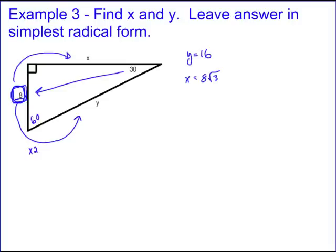The next video is going to show you when you're given the hypotenuse or the long leg in a 30-60-90. The reason that's different is because it requires you to divide by a radical. We'll show you in the next video how to divide by radicals and then how to solve these problems.